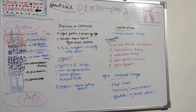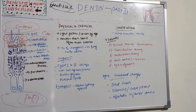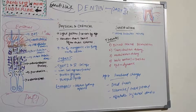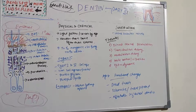Dentine is a light yellowish color and it becomes darker with age. It is harder than bone but considerably softer than enamel. It has a lower content of mineral salts, which renders it more radiolucent than enamel — appearing darker on radiographs due to its lower mineral salt content.